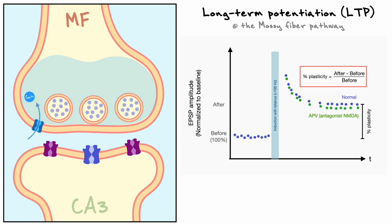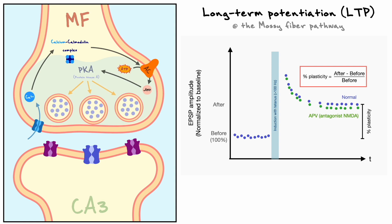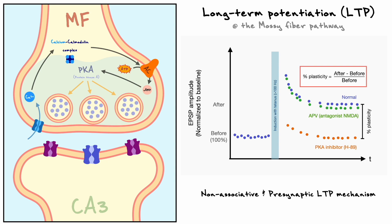In this mechanism, sustained depolarizations by the tetanus cause large amounts of calcium to enter the presynaptic terminal. This calcium entry binds to calmodulin and activates a calcium-calmodulin-dependent adenylyl cyclase. Adenylyl cyclase converts ATP to cyclic AMP, which activates PKA. PKA then phosphorylates proteins involved in the vesicle cycle, increasing transmitter release and the postsynaptic response. If the experiment is done with a PKA inhibitor, LTP does not occur. Furthermore, because the postsynaptic cell is not engaged, this form of LTP is said to be non-associative.